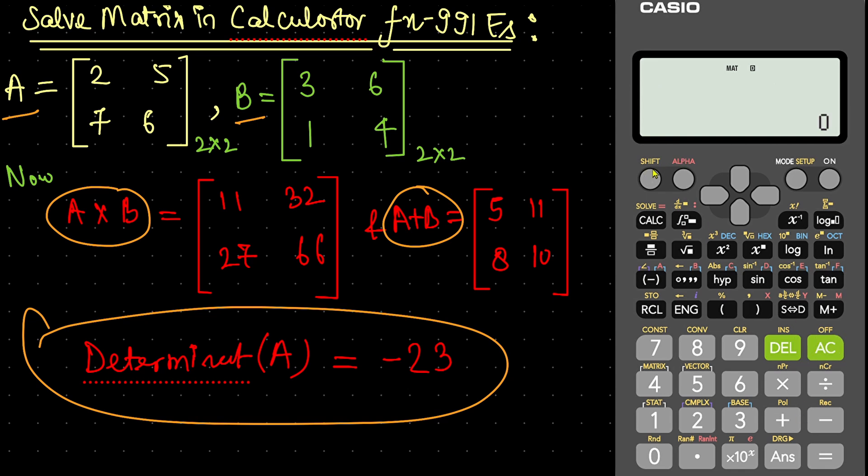Press shift. Here you will see the 4 and on the top of it, it is written as matrix. Press 4. Now, matrix A, which is on 3. Press 3. Into. You want to multiply A into B. Now, press again shift. Matrix. Matrix B is on fourth number. Press 4. And here matrix A into matrix B. Press equal and you will find your answer.